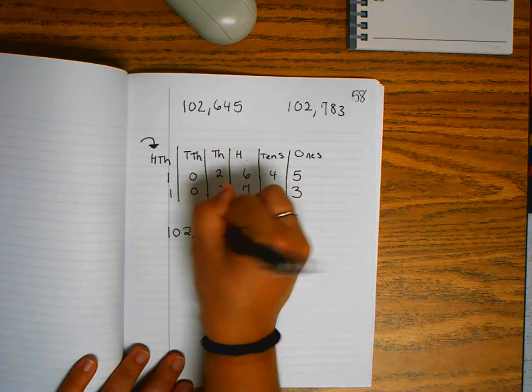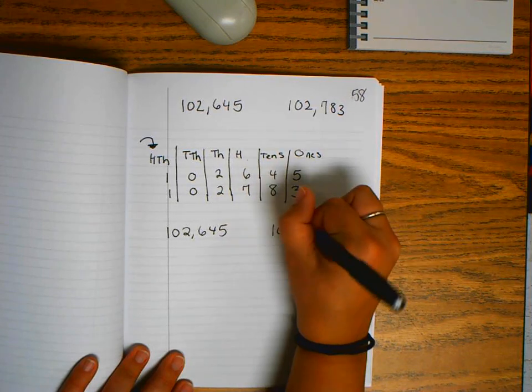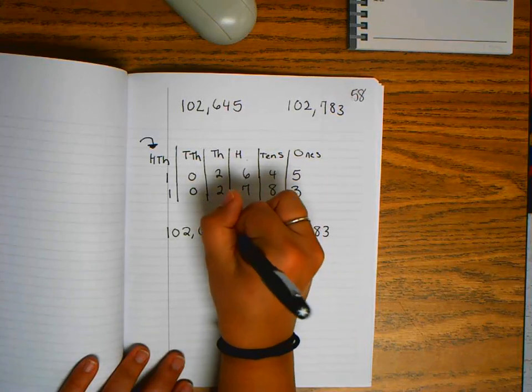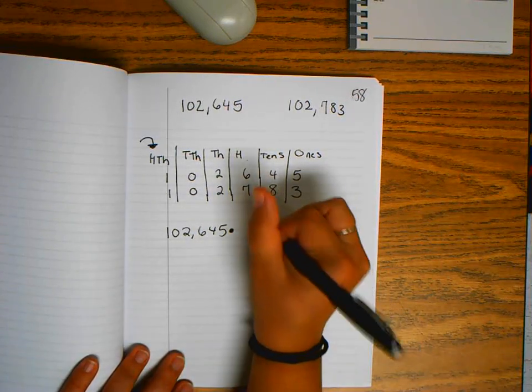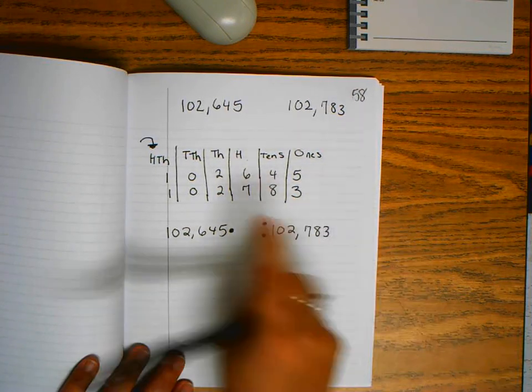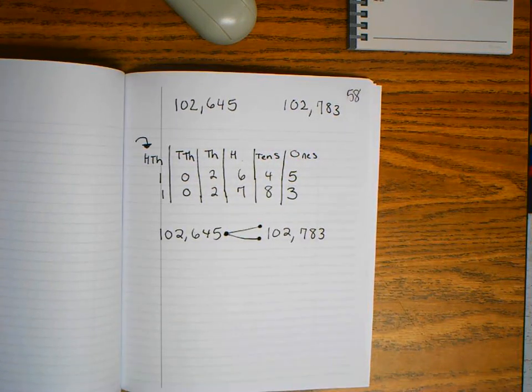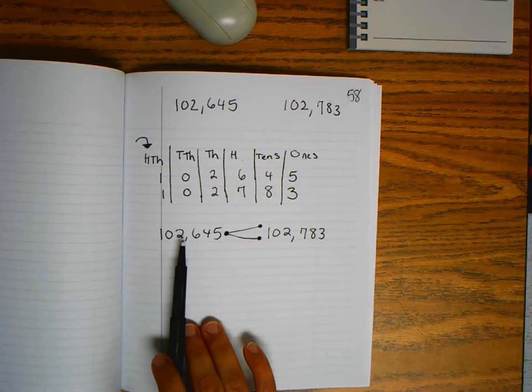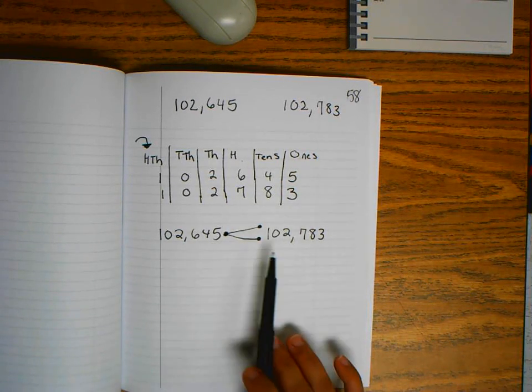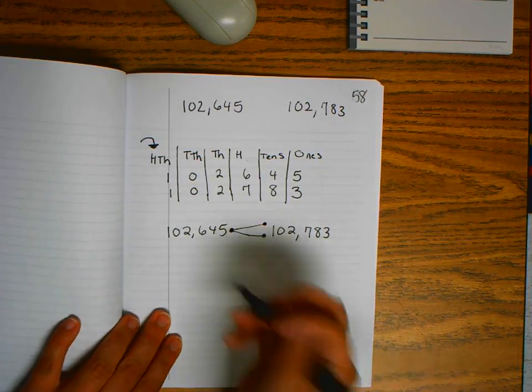I said 6 was less, so I put one dot by the 6. I said 7 was more, so I put two dots by the number with 7 in it. Now I connect to get my symbol. This reads as 102,645 is less than 102,783.